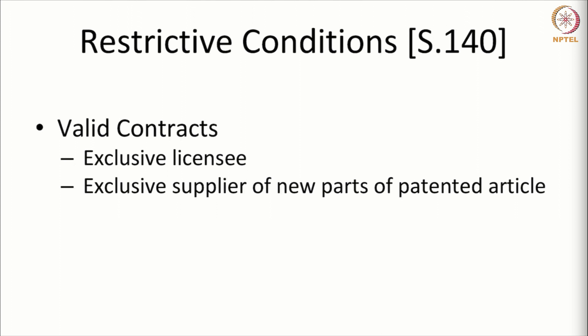The Act also mentions certain contracts that are valid. One is a contract where there is a restriction imposed on the exclusive licensee not to sell products other than that of the patentee. This is typically seen in a franchisee agreement where the licensor asks the franchisee not to sell any other product. Such a condition is valid because you are restraining the person from selling any product other than your own.